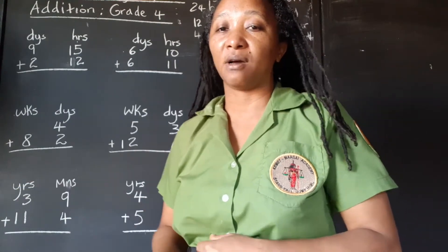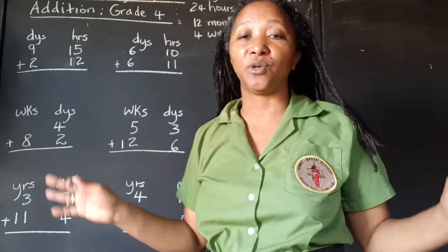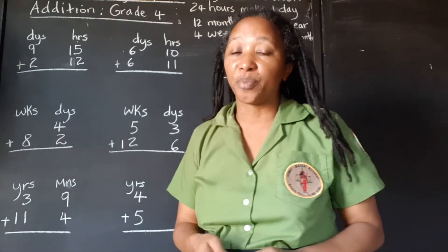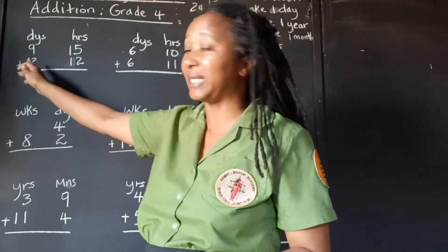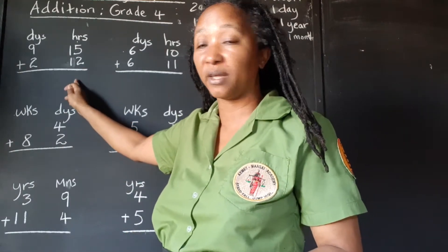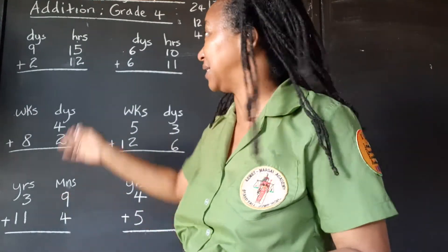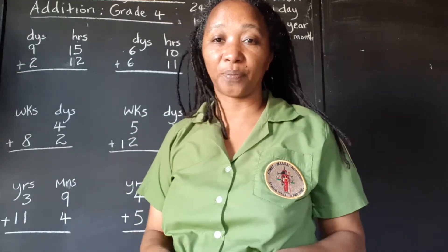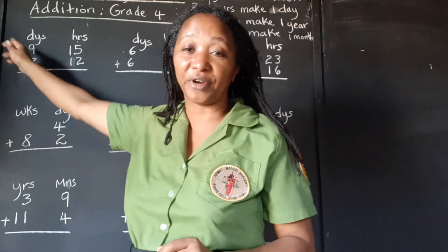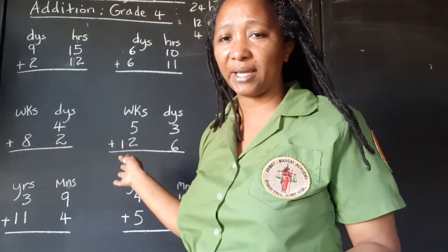Once you follow the steps I'm going to show you, you can use it to work any combination, any division of time. When we're adding days and hours, since there are 24 hours in one day, if we get 24 or more under the hours, we have to see how many groups of 24 we can get out of that and transfer it to the days. If we get 24 hours, that's one full day — put zero hours left and transfer that as one full day.